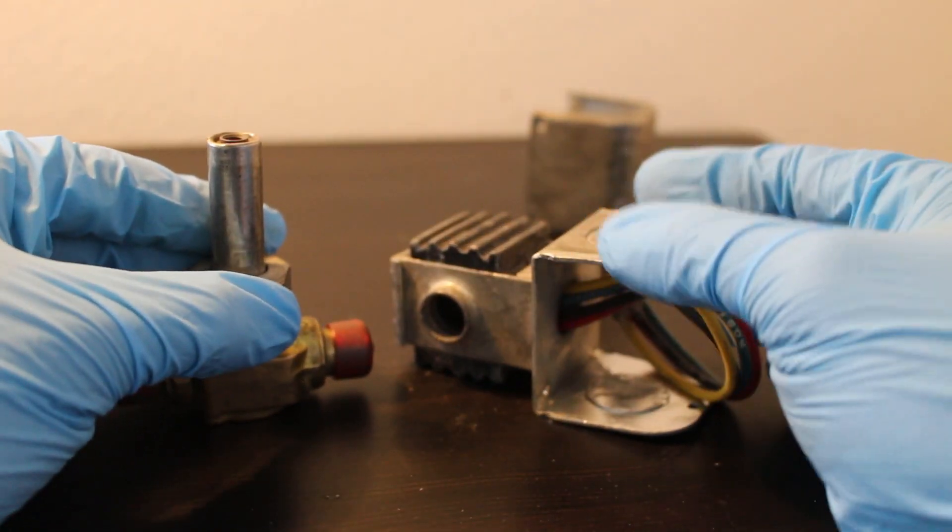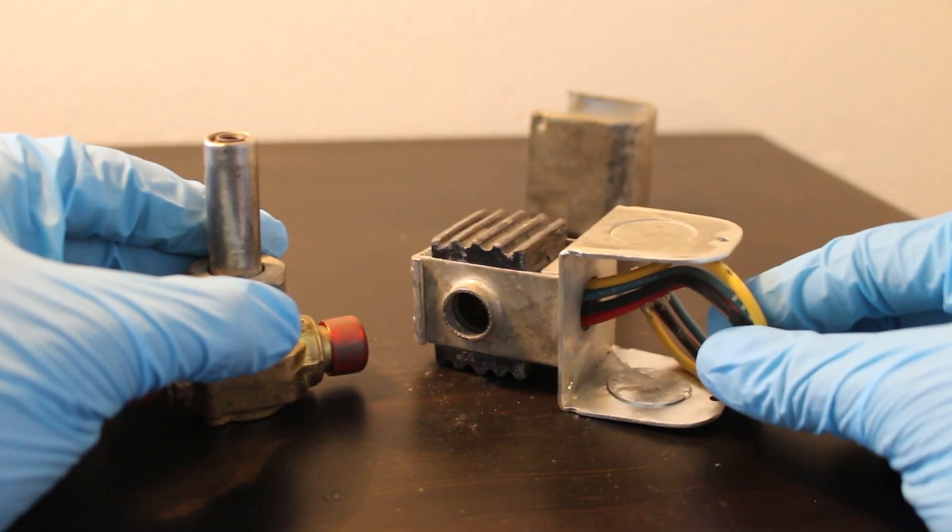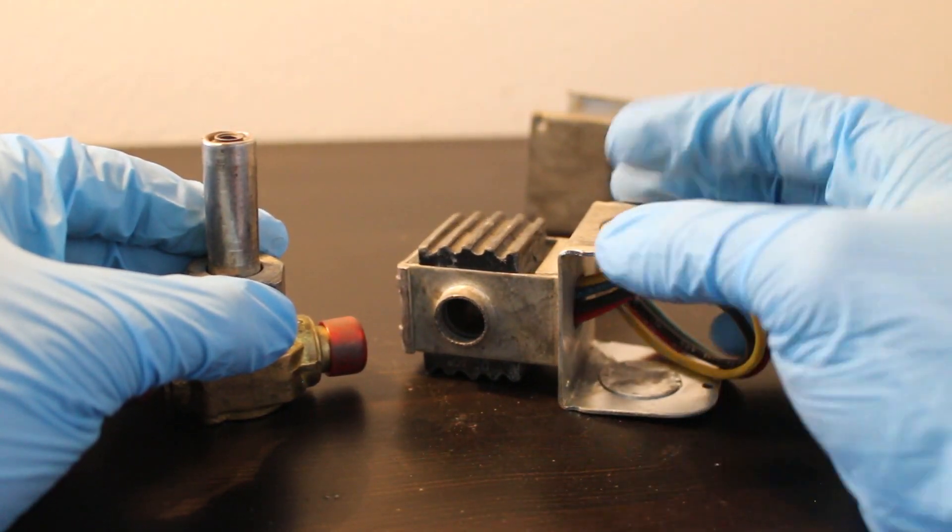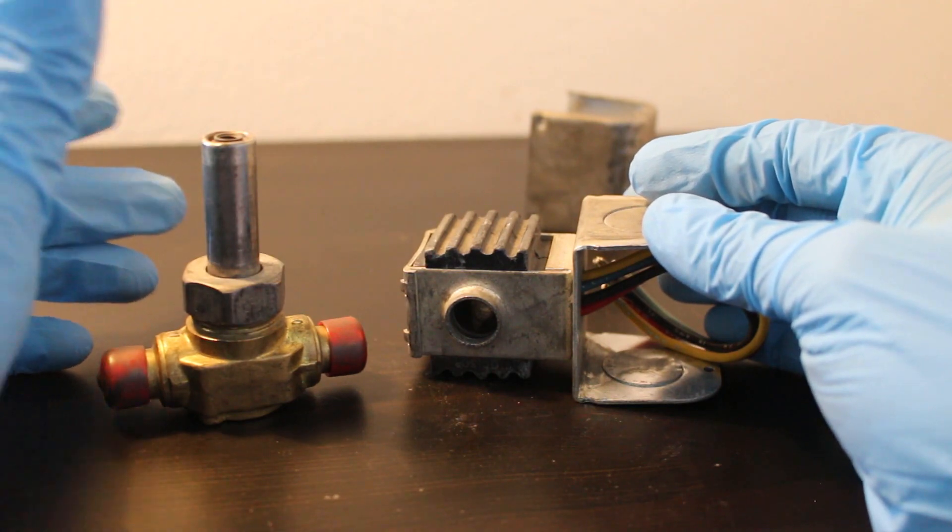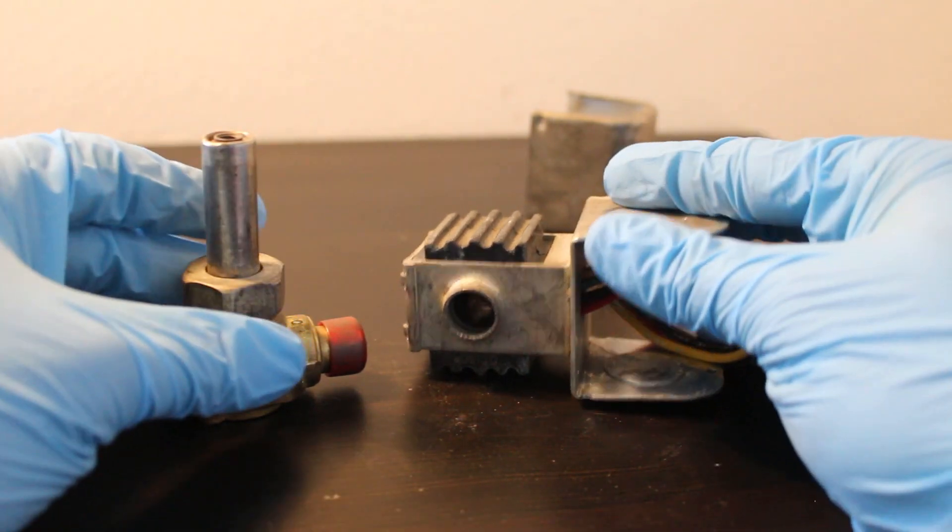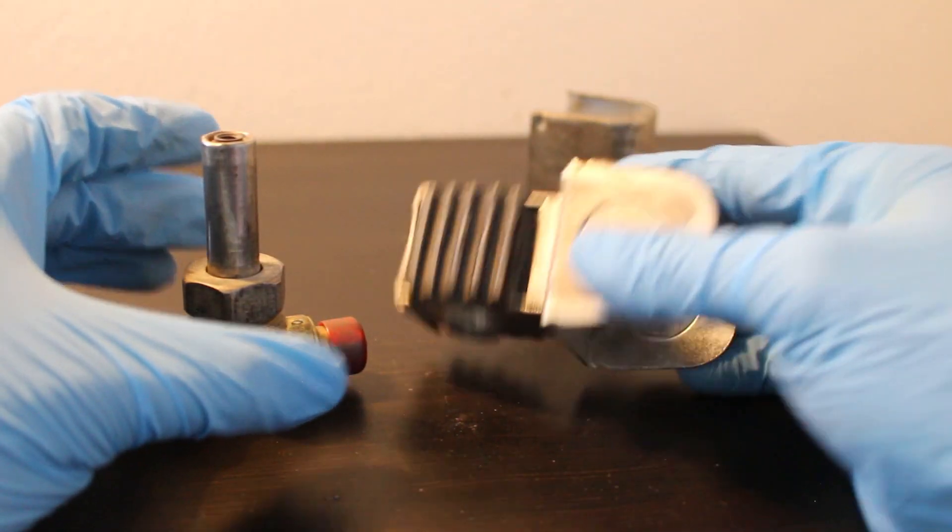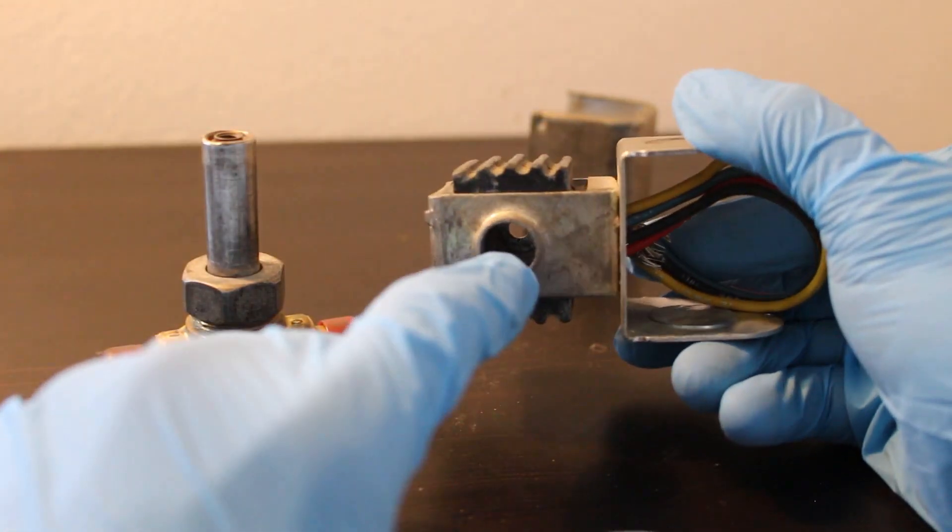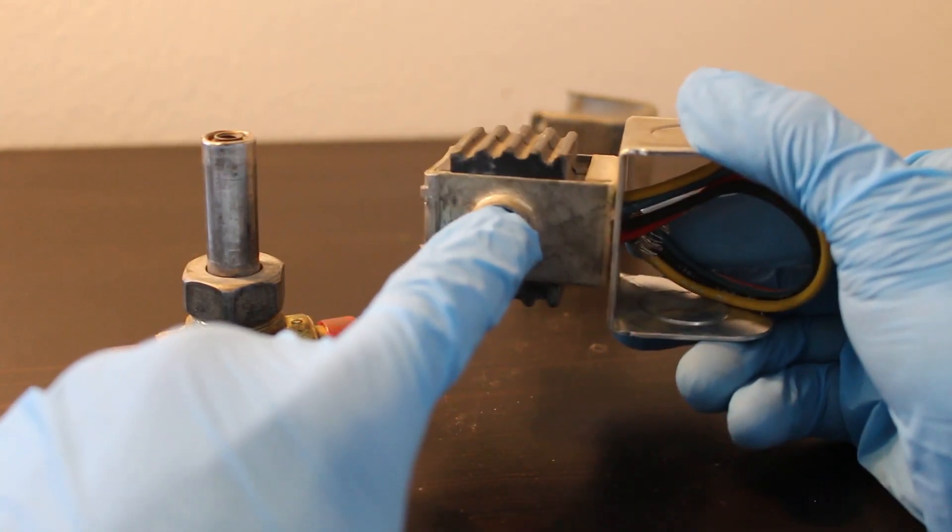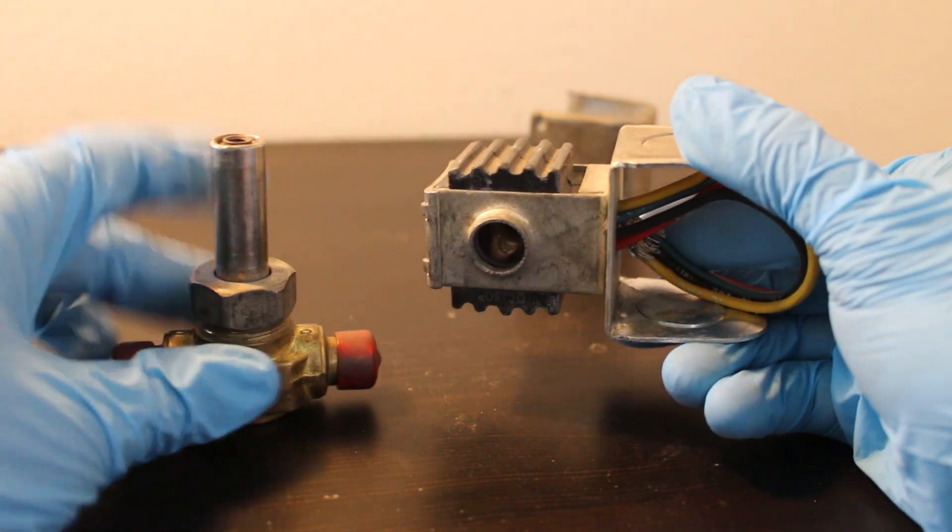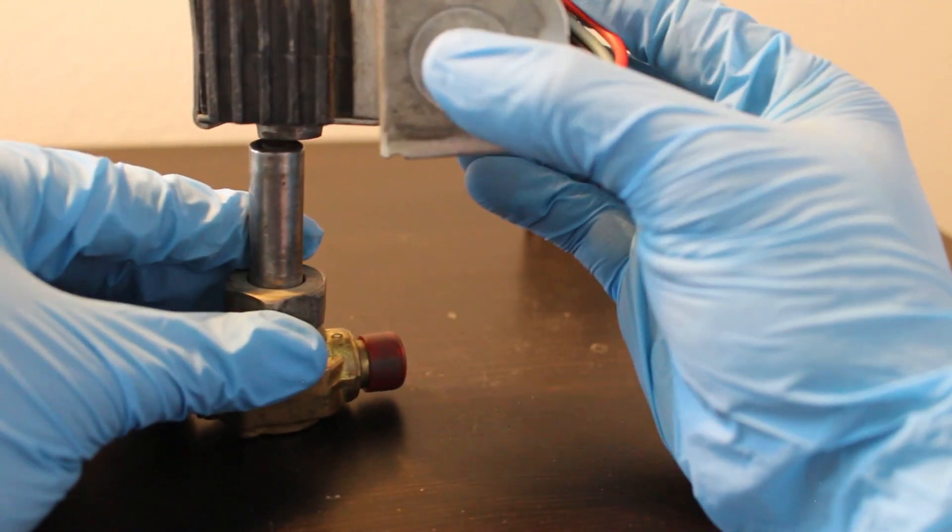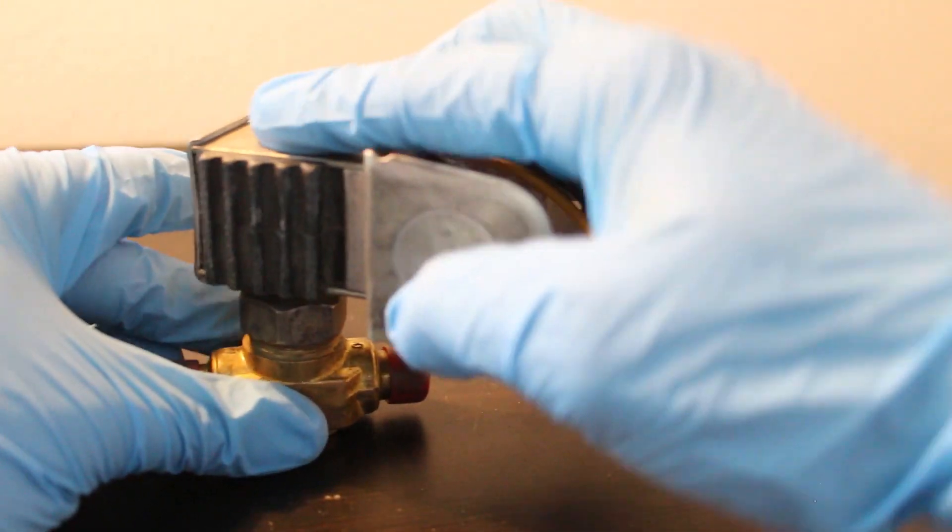So the way this works is, once your coil is energized, depending on whichever voltage supply, either 120 or 240, once the coil is energized, it creates a magnetic field. And inside here is where the magnetic field is created, which is on the solenoid valve itself.